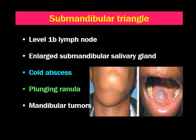In this picture, we can see a lingual ranula, and occasionally that may plunge to the neck from the mylohyoid muscle.